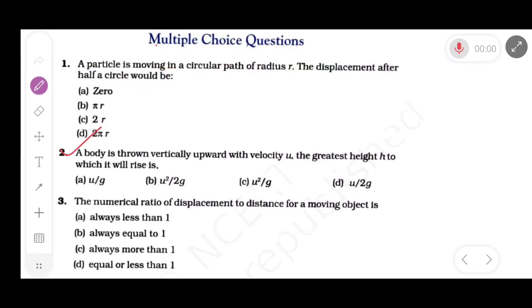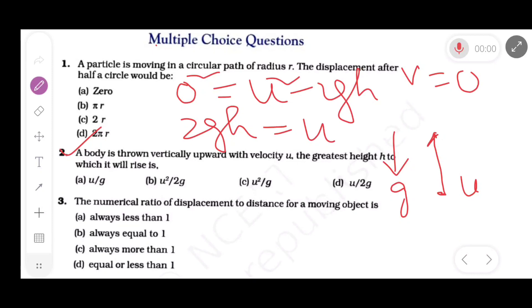Now question number 2. A body is thrown vertically upward with a velocity u, the greatest height h which it will rise. Suppose u be the velocity of projection. At the top point of the journey velocity becomes 0, and acceleration is due to gravity directed downward. So using the formula v² = 0 = u² - 2gh. H is the maximum height. So 2gh = u². Therefore h = u²/2g. Option B is correct.